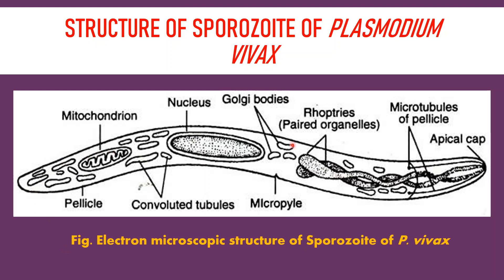The cytoplasm of the sporozoite consists of a single mitochondrion, many convoluted tubules of unknown function, and Golgi bodies. A micropyle is also present.